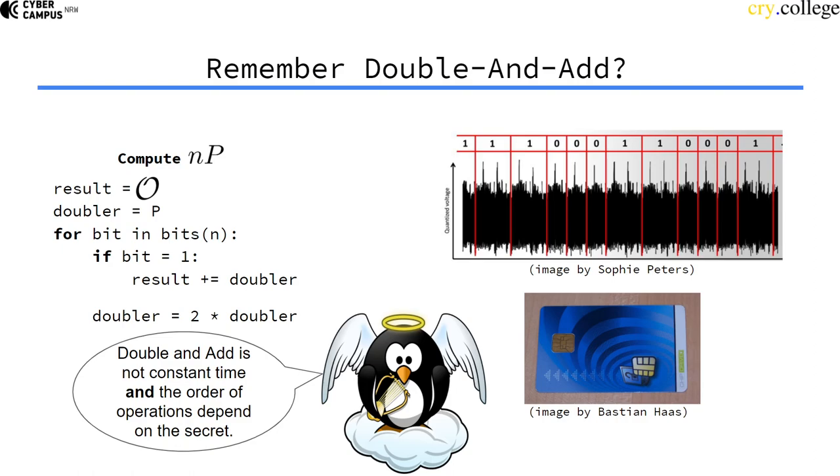You don't really need to know this kind of attack for our course, I just wanted to say that there are side channel attacks on double and add that make use of the fact that the operations are directly linked, the order of operation is directly linked to the bits of the secret.